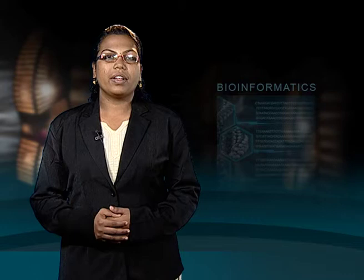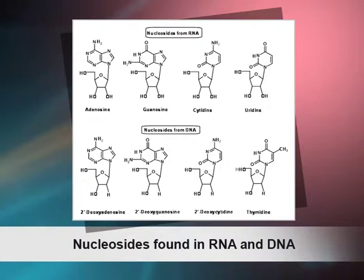Nucleosides: A unit consisting of a base bonded to a sugar through a C-N bond (beta-glycosidic bond) with the loss of a water molecule is referred to as a nucleoside. A beta-glycosidic bond is formed between the carbon atom of the sugar and the nitrogenous base. The four nucleoside units in RNA are called adenosine, guanosine, cytidine, and uridine, whereas those in DNA are called deoxyadenosine, deoxyguanosine, deoxycytidine, and thymidine. In each case, N9 of a purine or N1 of a pyrimidine is attached to C1 of the sugar.